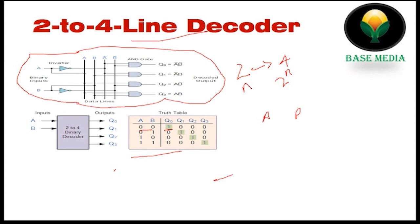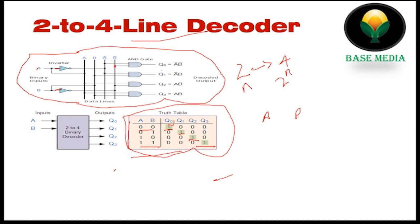The logic diagram is designed with inputs A and B, plus NOT gates. We have two nodes in the output. We have an input from the inverse. We have NOT gates and two nodes in the output. We have a complement and its complement, giving us a decoded output. That gives us the full logic diagram.